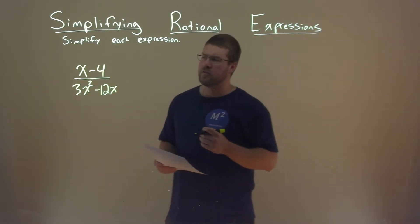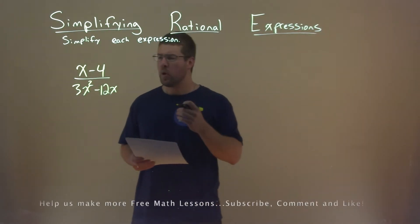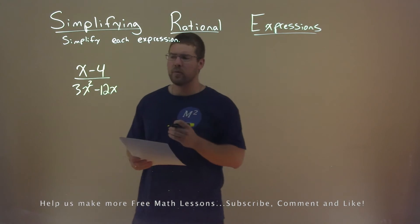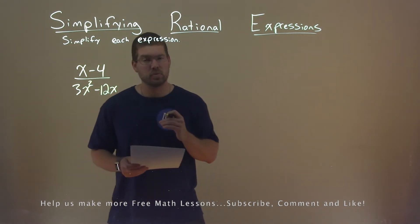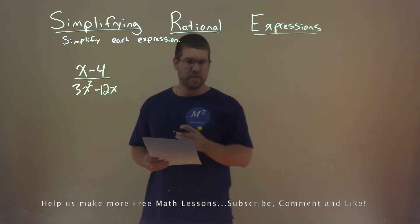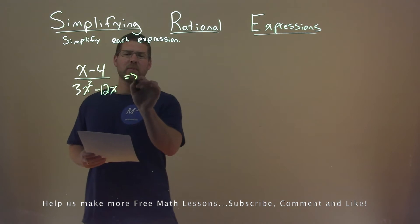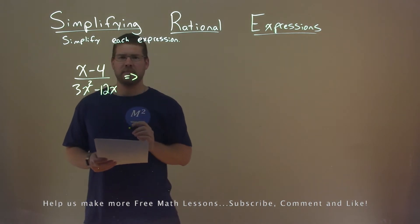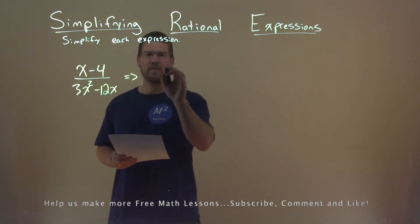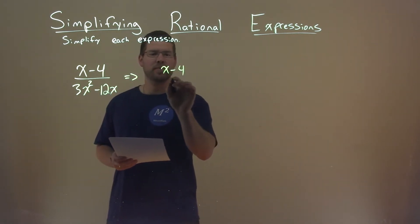We're given this expression right here: x minus 4 over 3x squared minus 12x, and we need to simplify it. Well, we'll see if we can break anything down. The numerator — nothing to really simplify there, we have an x minus 4.